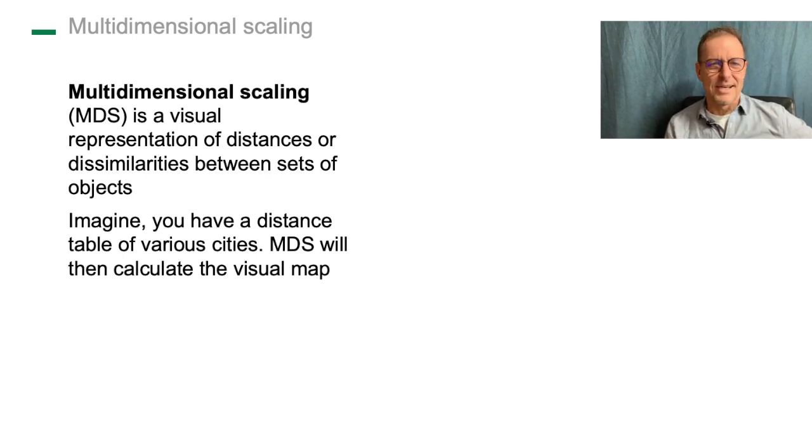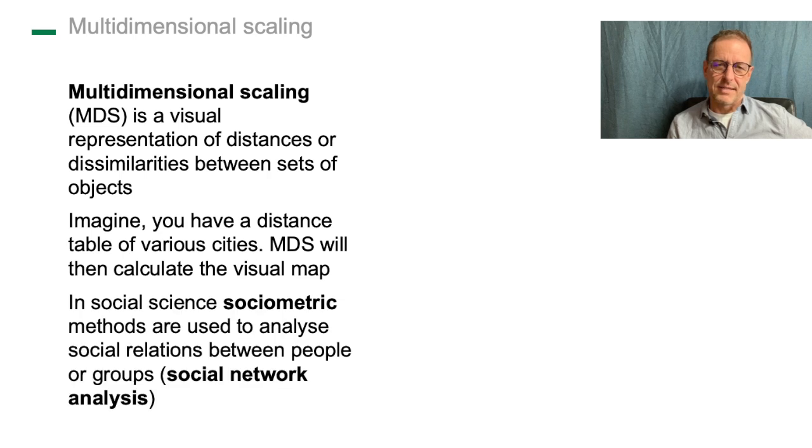But what you want is a map. You want to see it, right? And this is what multidimensional scaling creates - it creates the map based on the distance matrix. Now you might ask yourself, why could that be relevant in social science? Well, it's very relevant, and there is one discipline I was not talking too much about in this entire course: sociometric methods.